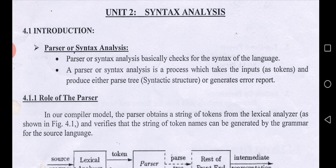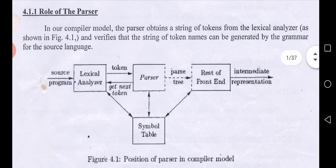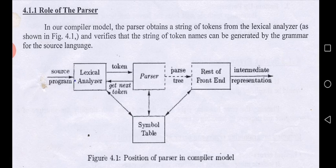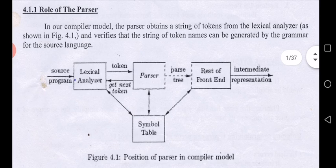We have a figure which explains the role of the parser. The center square symbol is the parser, with the lexical analyzer before it and the rest of the front-end phases after it. There are six different phases in total, and after the parser there will be different phases which we generally refer to as the 'rest of the front end'. The source program is the input for the lexical analyzer, and its output is tokens.